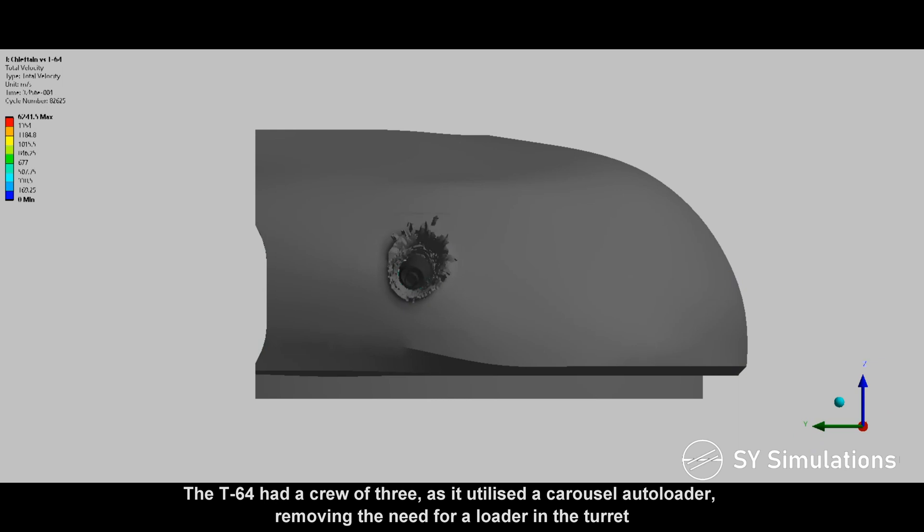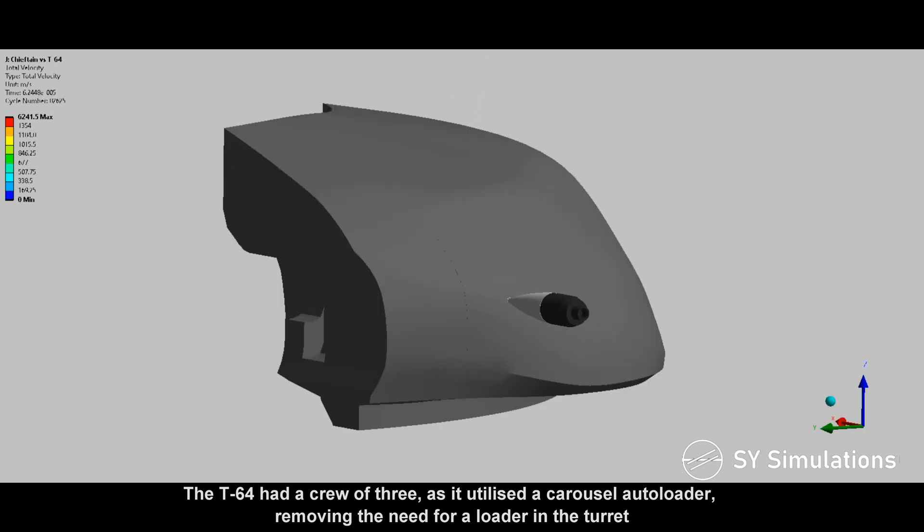The T-64 had a crew of three, as it utilized a carousel autoloader, removing the need for a loader in the turret.